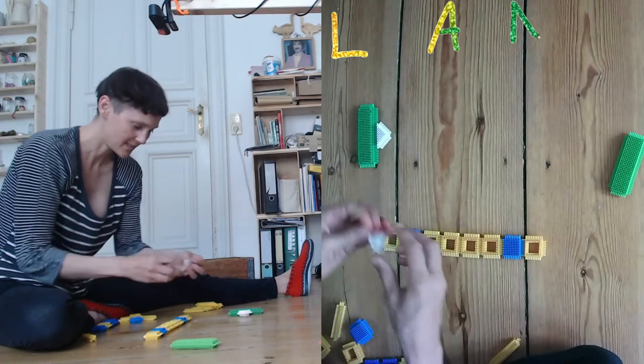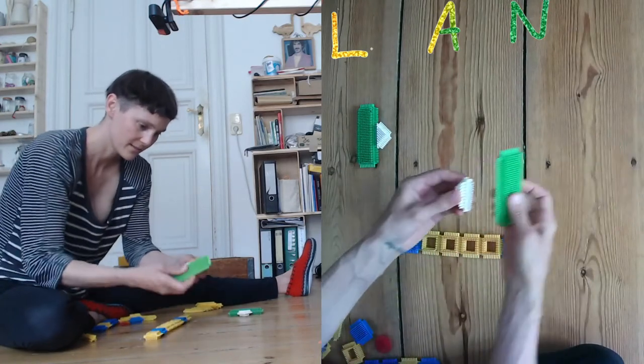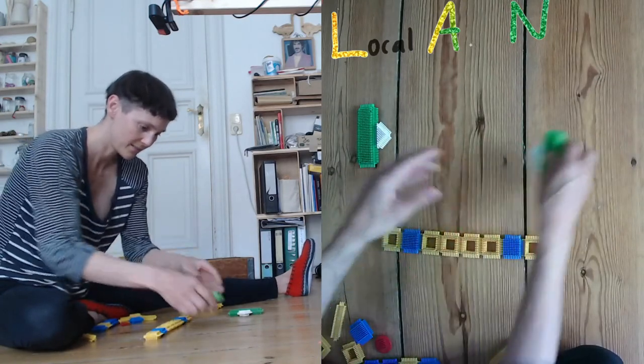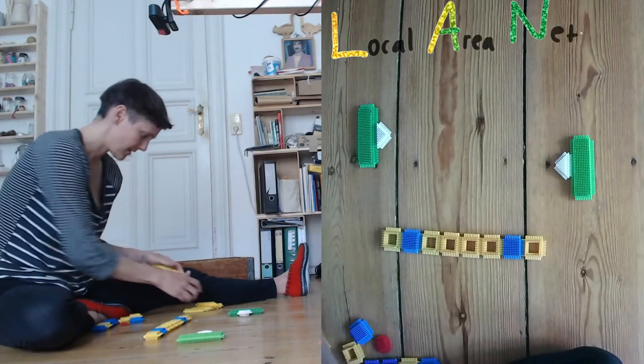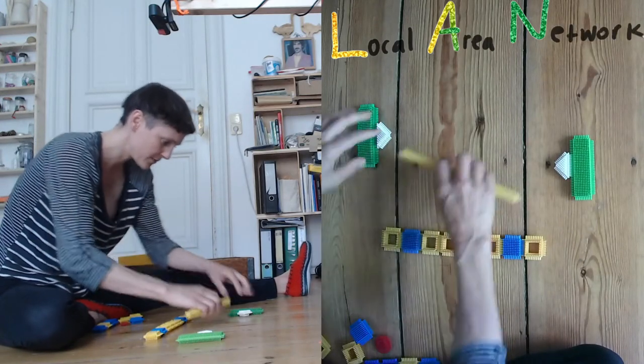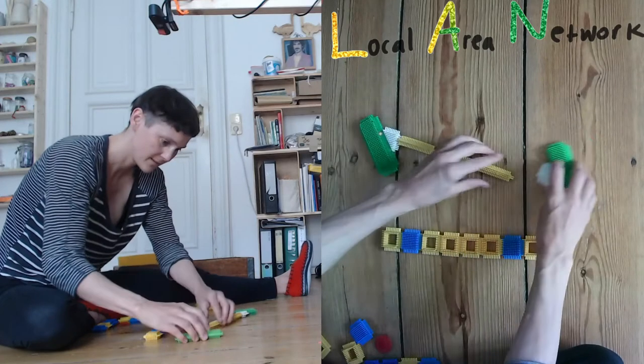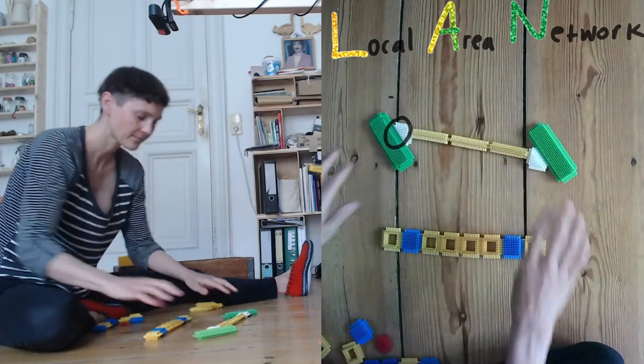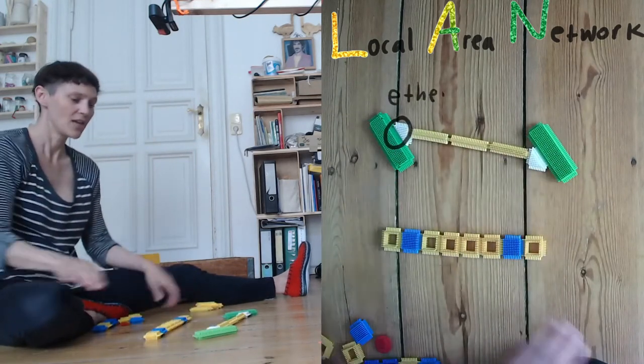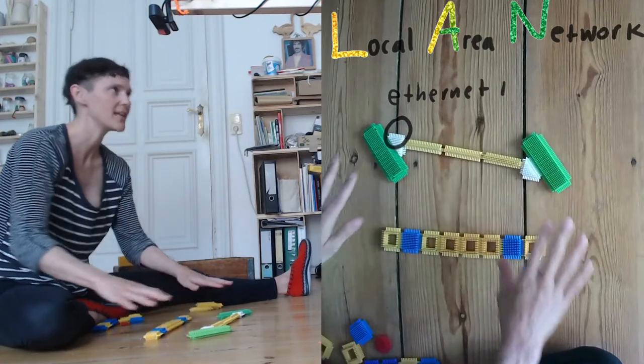So let's say this is the Ethernet port on these bricks and we connect and they're further away, they're in different rooms. Now they're connected over distance and even though it's just two, it's already a network.